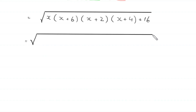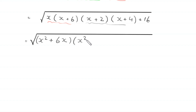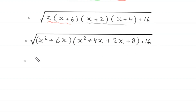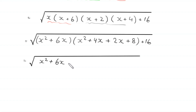Next, we multiply these pairs: x(x+6) becomes x²+6x, and (x+2)(x+4) becomes x²+6x+8. So the expression becomes square root of (x²+6x)(x²+6x+8) plus 16.